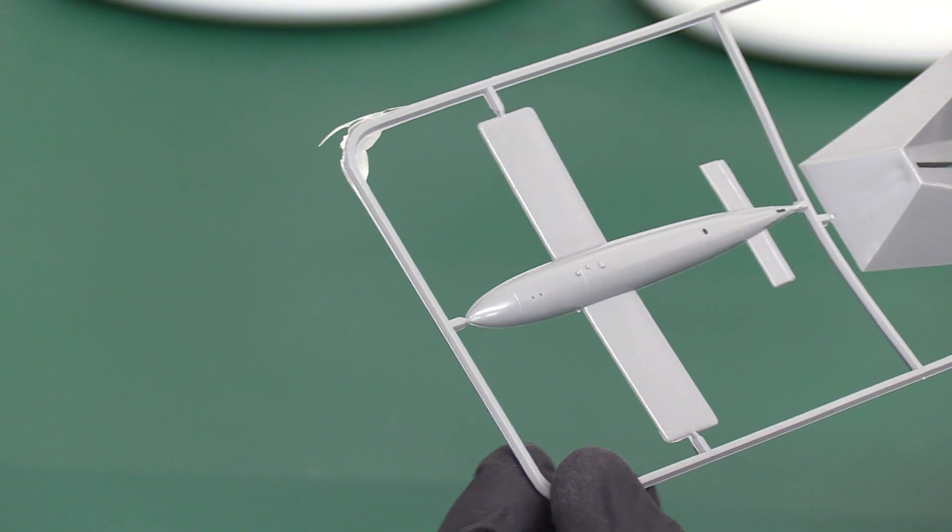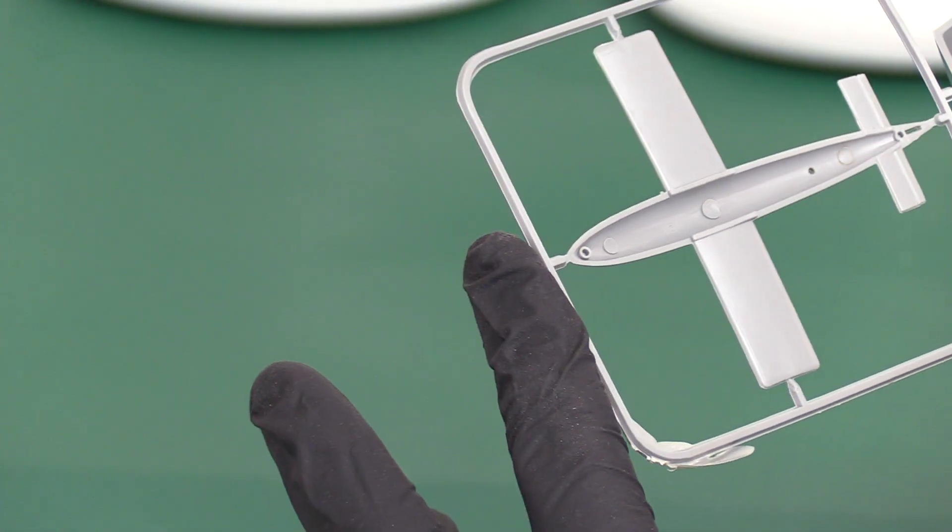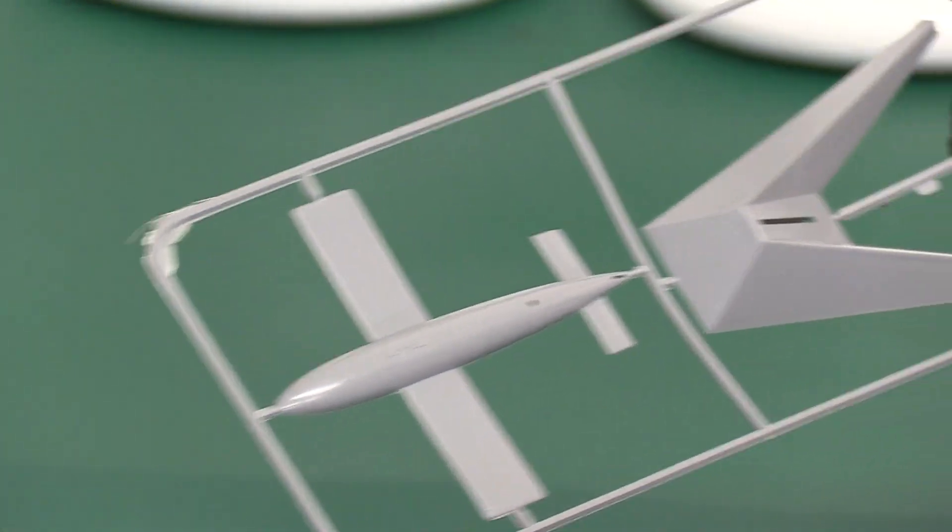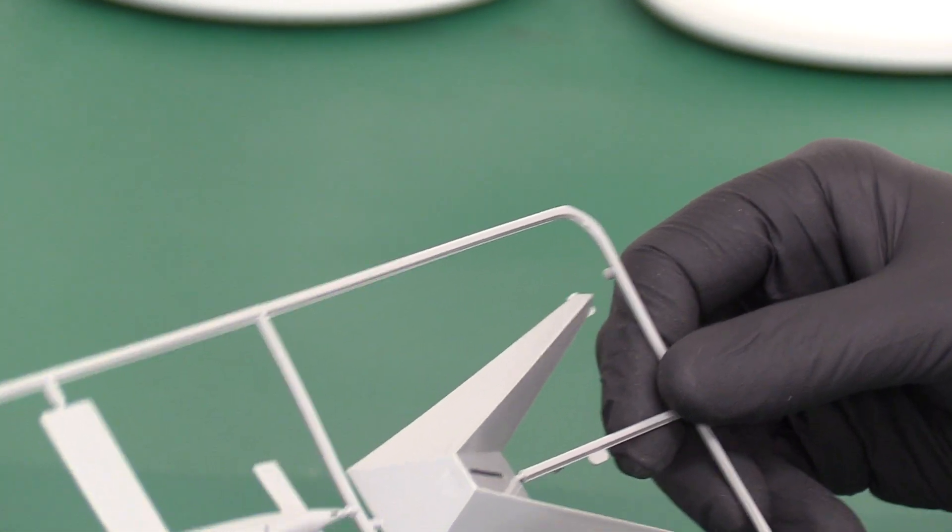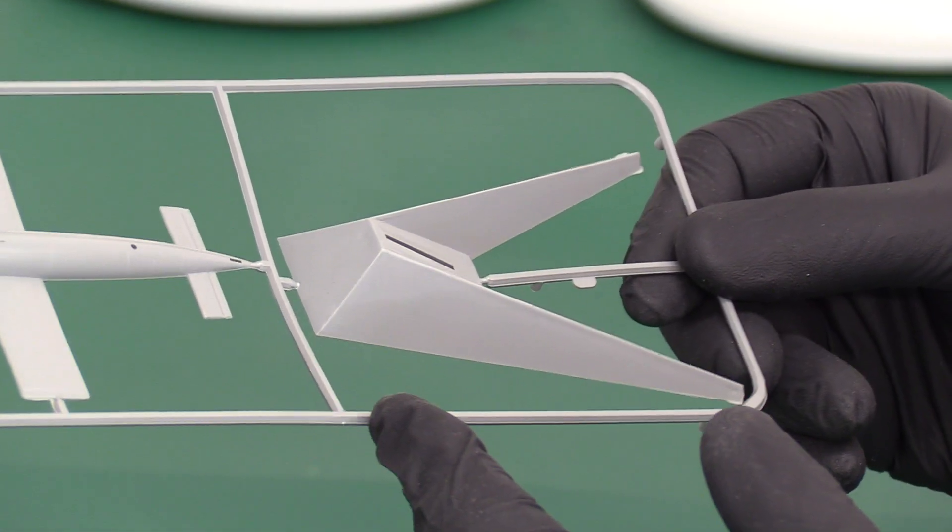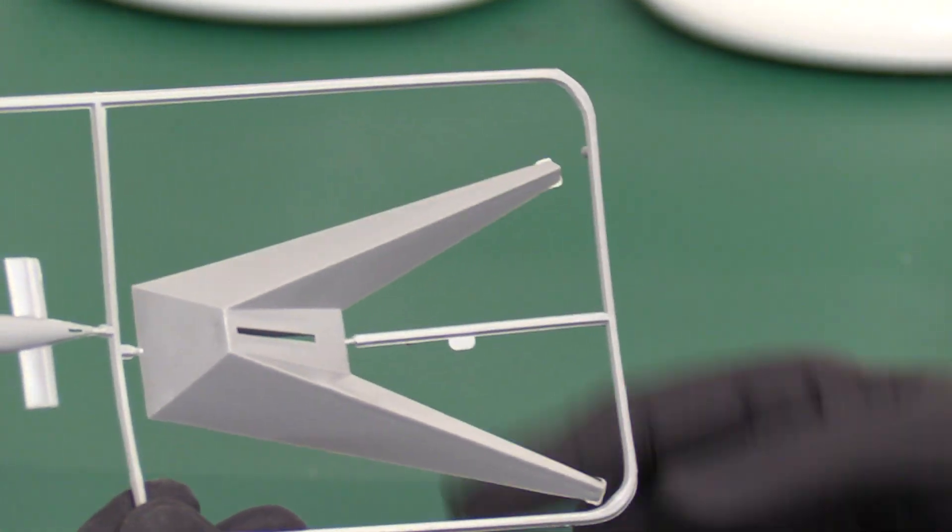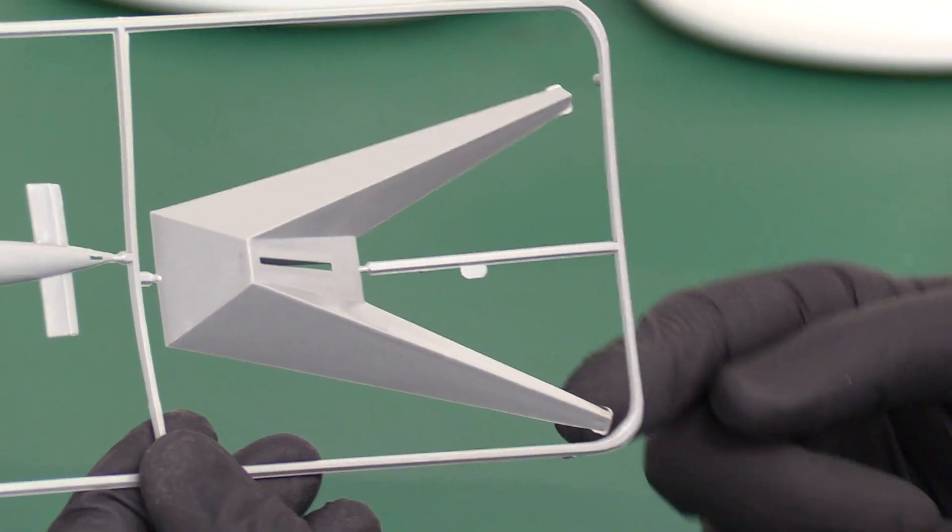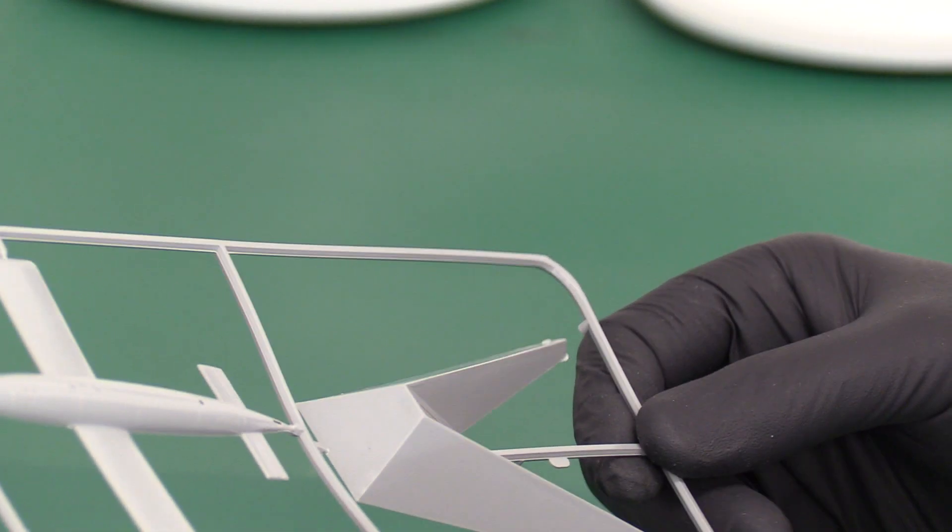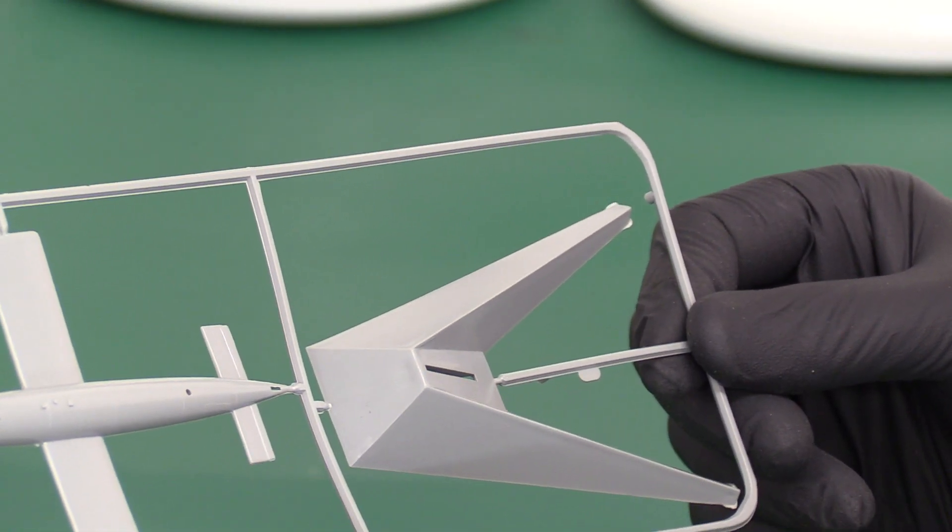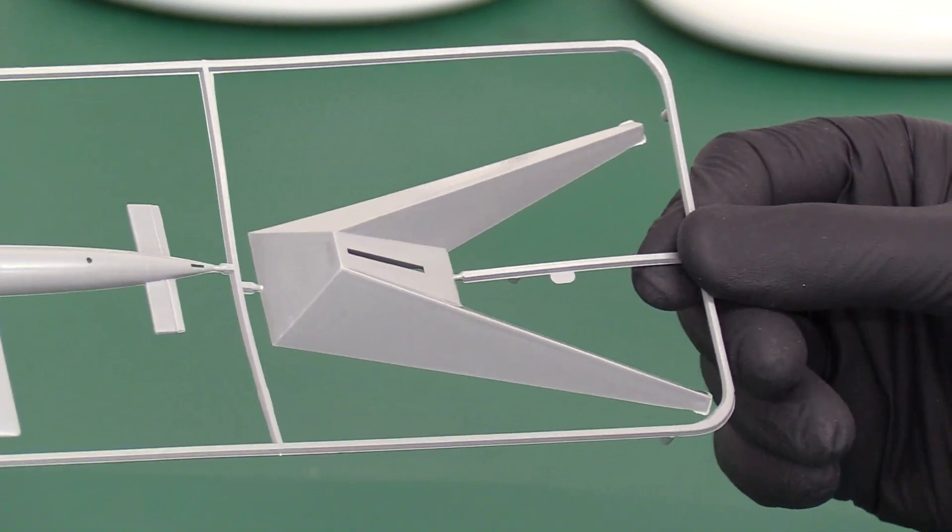There's not much detail, but then there isn't a lot of detail on the real aircraft of course. It has no ailerons, only a rudder and an elevator. Quite a bit of flash on the back of the stand here, but it's not too bad. Easy to get off. Quite a substantial stand, that's quite good.